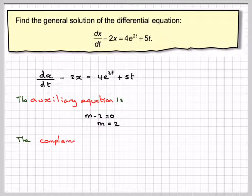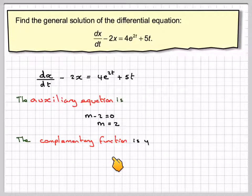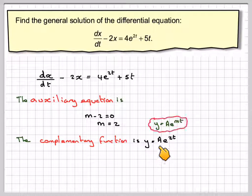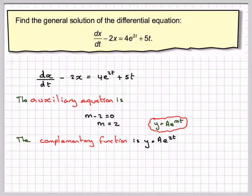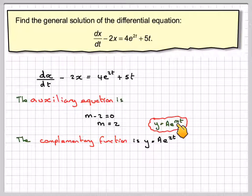And therefore, the complementary function is going to be y is equal to ae to the 2t, so it's of the form y is equal to ae to the mt.